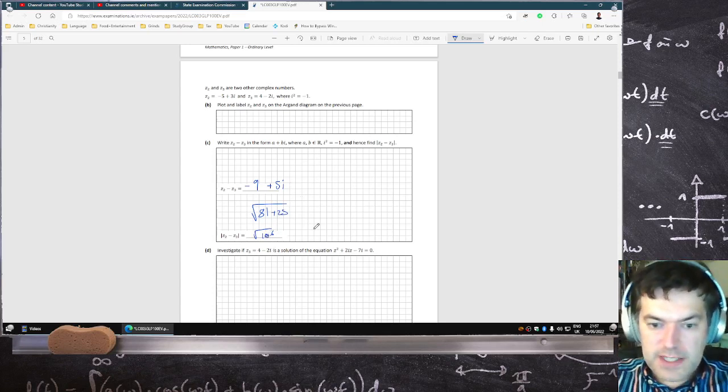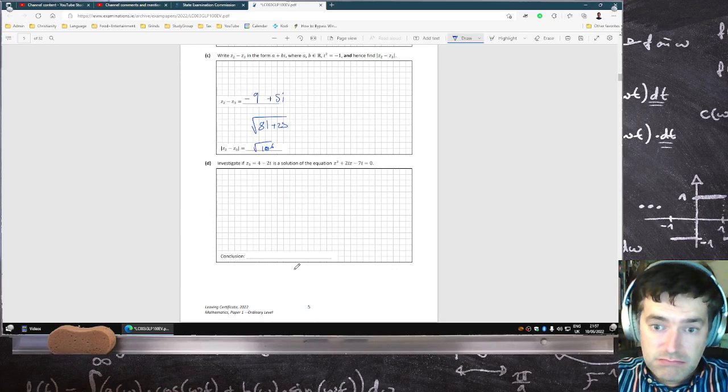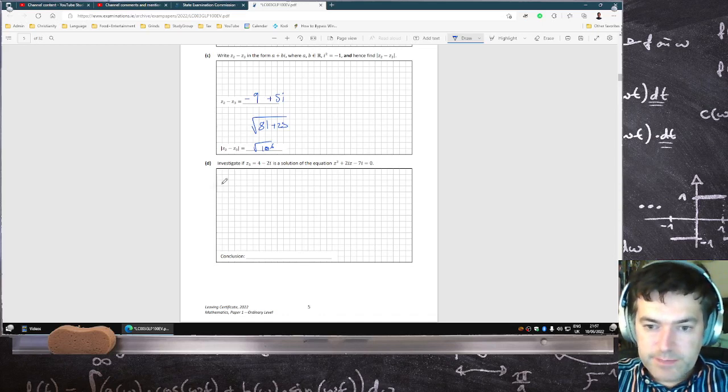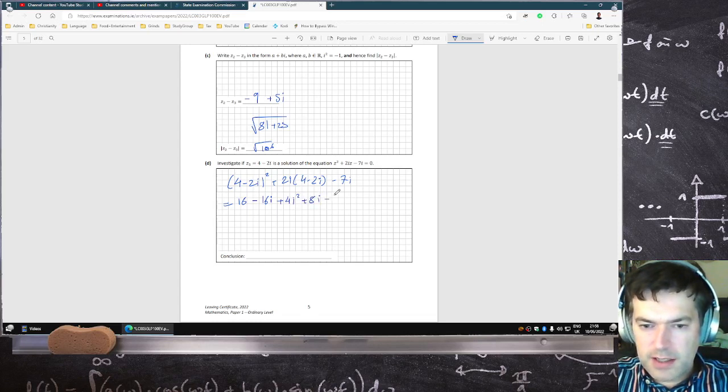Investigate if Z3 is a solution to that equation. All right. Let's check it out. 4 minus 2i squared plus 2i times 4 minus 2i minus 7i. Cancel. Right, so that would be 16. And then minus twice the first by the second, 16i. And then plus 4i squared plus 8i minus 4i squared minus 7i.